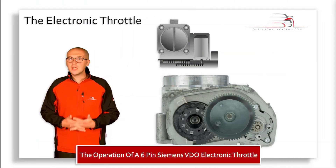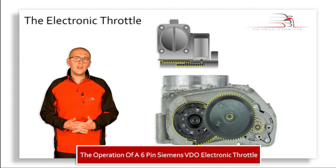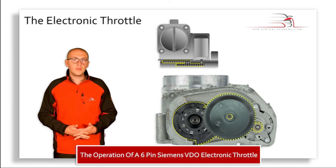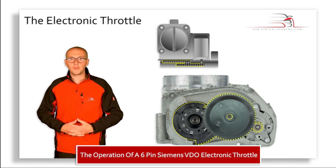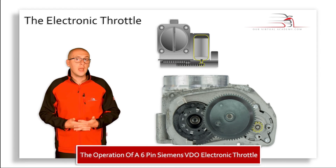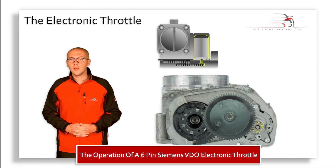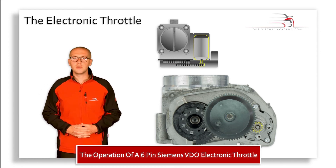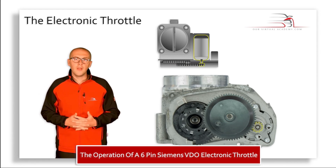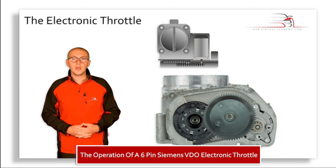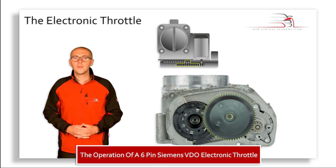Here we can see the gears which transfer the rotational movement of the motor to the throttle valve. Here we have the motor, which can turn in both directions, and that drives the large central gear you can see here.